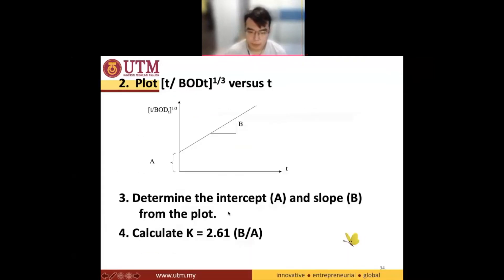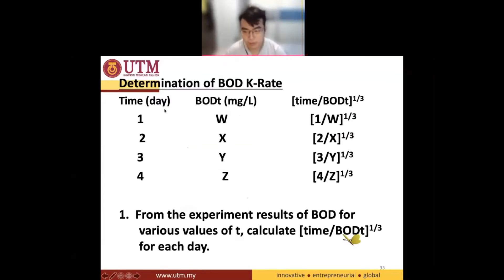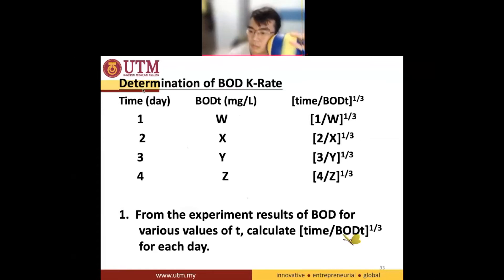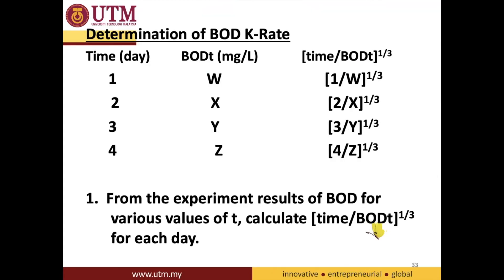In order for us to find out K, you need to do several days of BOD. You take samples from the river, and then if you want to do dilution or not, it's up to whatever you think. If you think that the BOD is very small, then you do not have to do dilution. You put those samples into four bottles — bottle one, bottle two, bottle three, and bottle four — and then put all those bottles into the incubator.